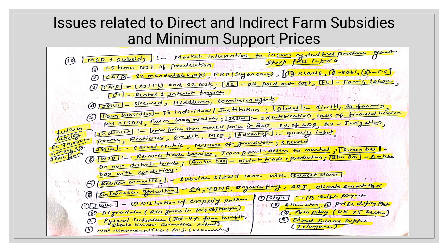Steps that can be taken: price deficiency payment, area planning, and direct income support. Telangana practices direct income support. Area planning is done in the UK — every area is planned for what crop should be grown there. Warehousing can also be promoted as an alternative.